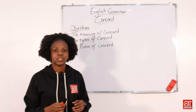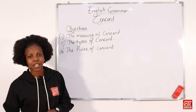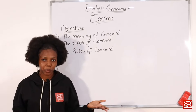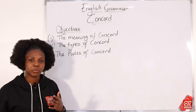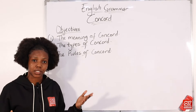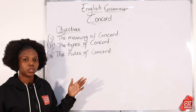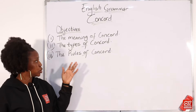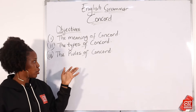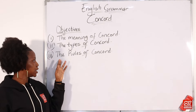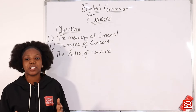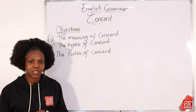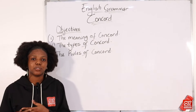Welcome back to my school channel. We'll begin today's lesson — do not forget the topic is Concord. I've outlined three objectives for today's lesson: number one, the meaning of Concord; number two, the types of Concord; and lastly, the rules of Concord. We'll begin with the first objective: the meaning of Concord.